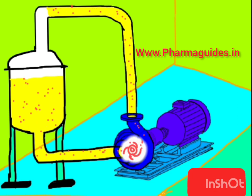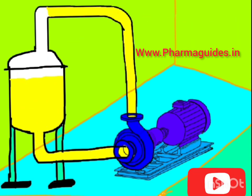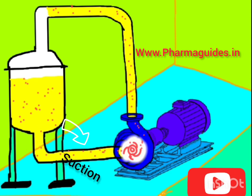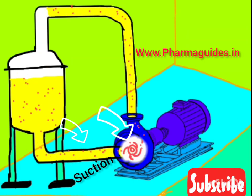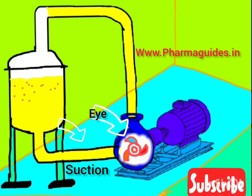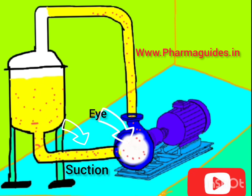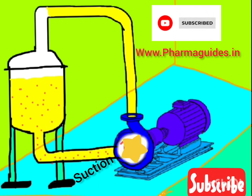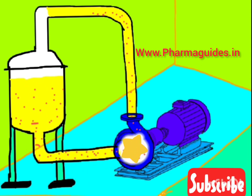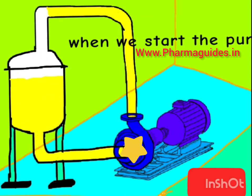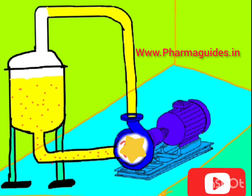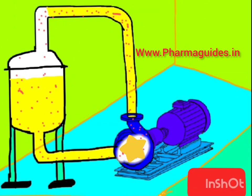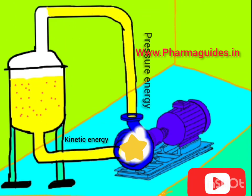The rotating impeller creates negative pressure or vacuum on the suction side of the pump, causing liquid to enter from the eye of the pump. The rotating impeller spins the water with it, creating centrifugal force inside the casing. In this way, kinetic energy is converted into pressure energy.